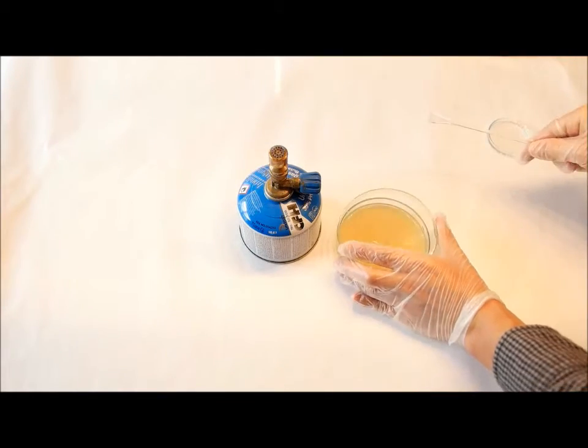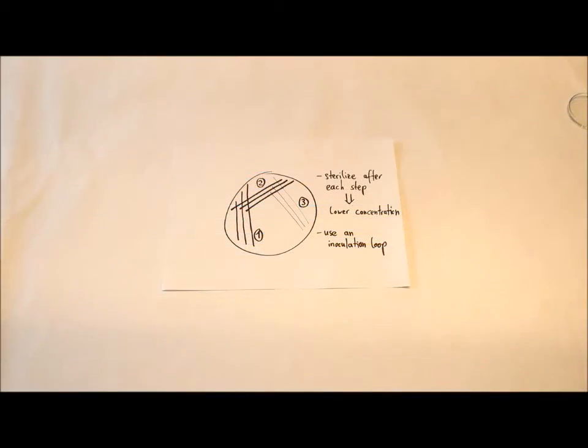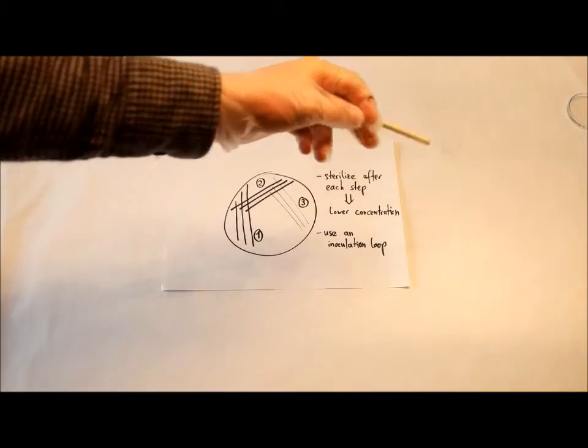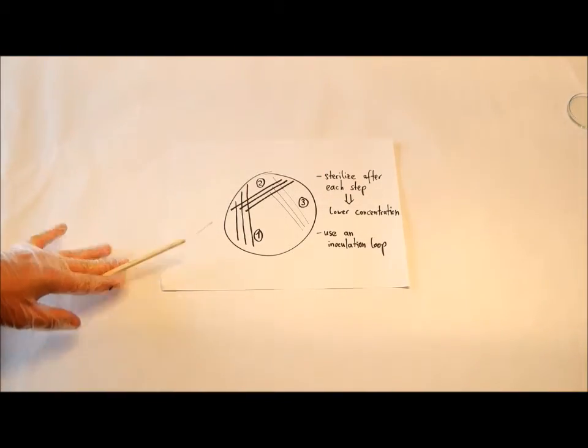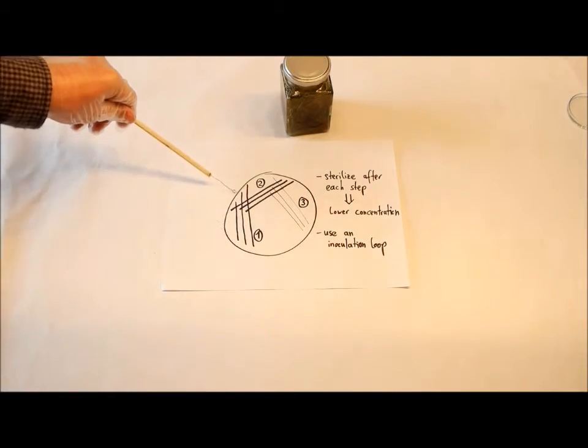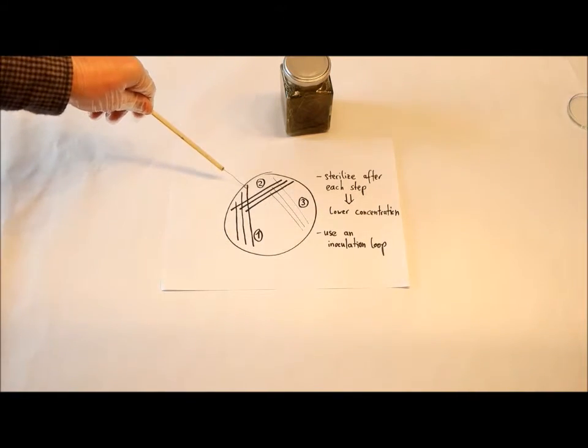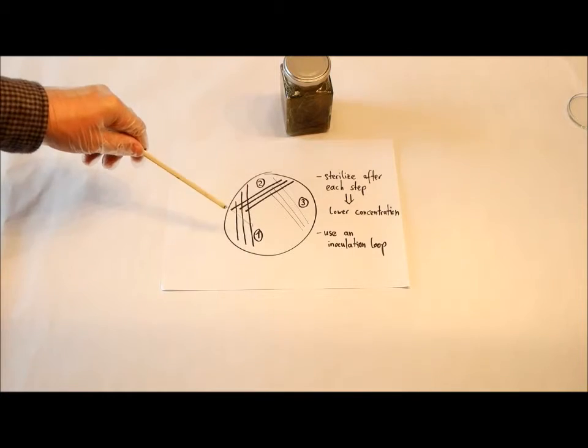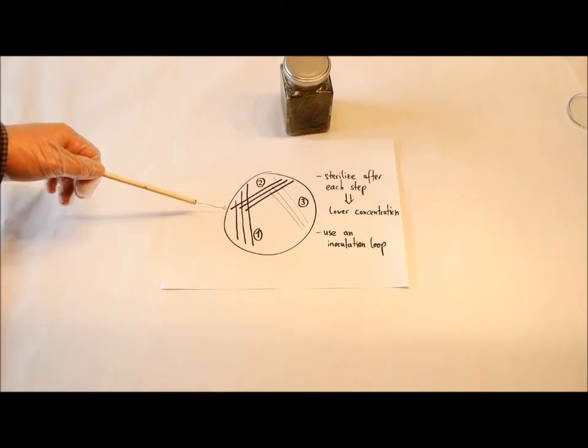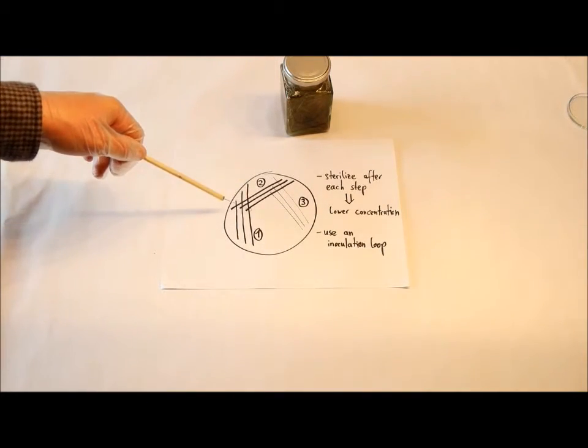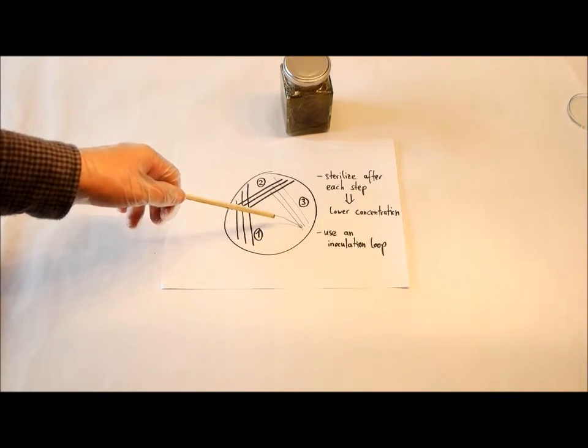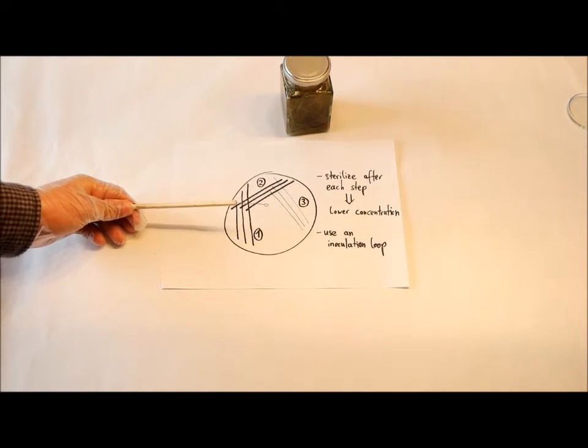So that was method one. Now for method two we will use an inoculation loop. Sterilize it and take a little drop of our bacteria suspension of the infusion of hay. And make little lines through our agar plate, not too deep, just on the surface. And after each three lines we will sterilize it. And then you can reach a lower concentration after each step. And here there will be maybe no bacteria at all but we will see that later.